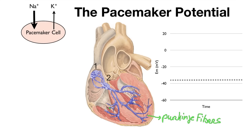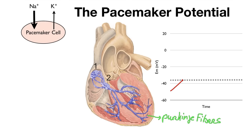Because the cell is much more permeable to sodium, we're going to have a situation where there's much more sodium coming in than potassium leaving. So because we have more positives going in than leaving, we're going to get a pacemaker potential where the cell normally depolarizes. And then when it reaches the threshold, something interesting happens.